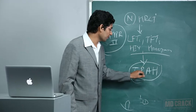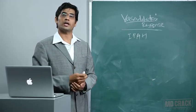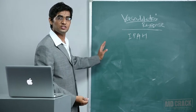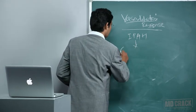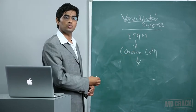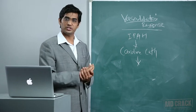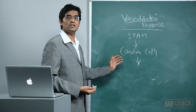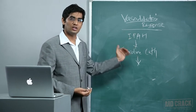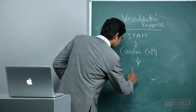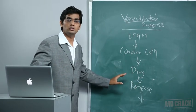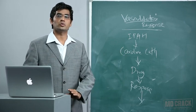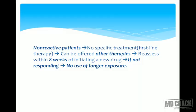For vasodilator response testing, cardiac catheterization is necessary. Through catheterization, you give nitric oxide, epoprostenol, or adenosine and check the change in pulmonary artery pressure. Patients who respond to vasodilator testing are good candidates for high-dose calcium channel blockers. Those who do not respond have no specific first-line treatment but may try other therapies.